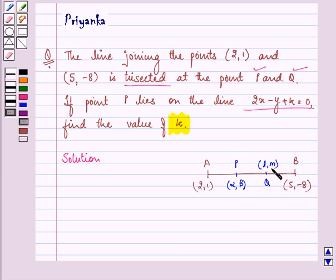So we are given that if point P lies on the line 2x minus y plus k equals 0, we need to find the value of k. Here it means that AP upon AB is equal to 1 upon 3. That is, this is one of the 3 equal parts.